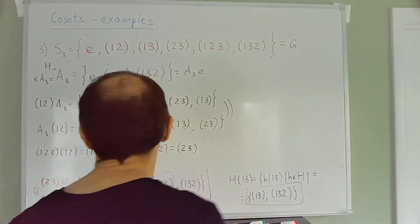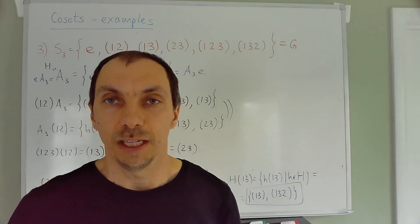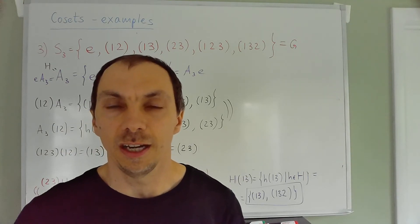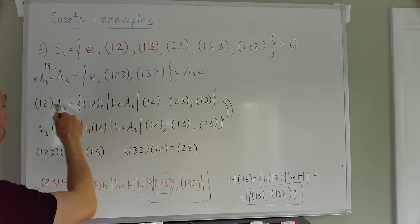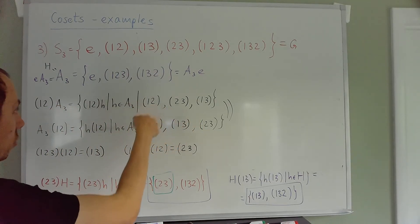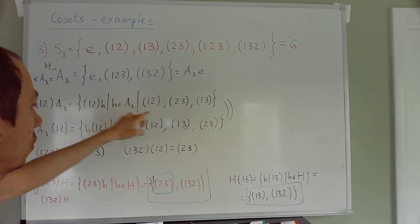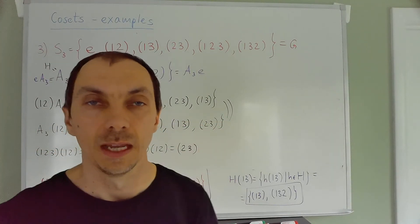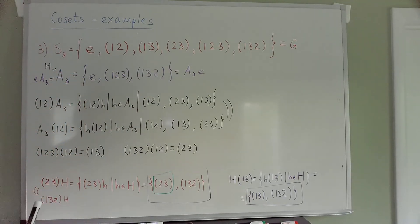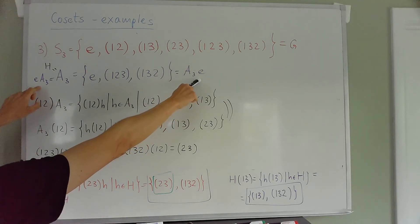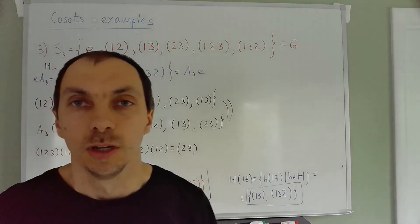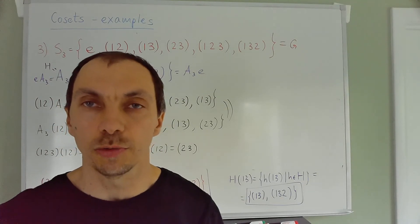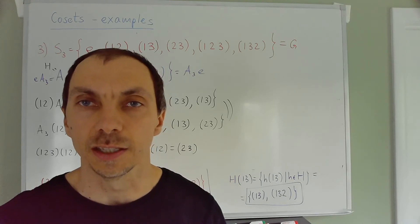Since cosets are either equal or disjoint, these must be the only cosets. The two cosets already exhaust all elements of S₃. So despite S₃ being a non-abelian group, the left cosets of A₃ are equal to the right cosets. For some subgroups left cosets equal right cosets; for others — like our earlier H = {e, (1 2)} — they do not.